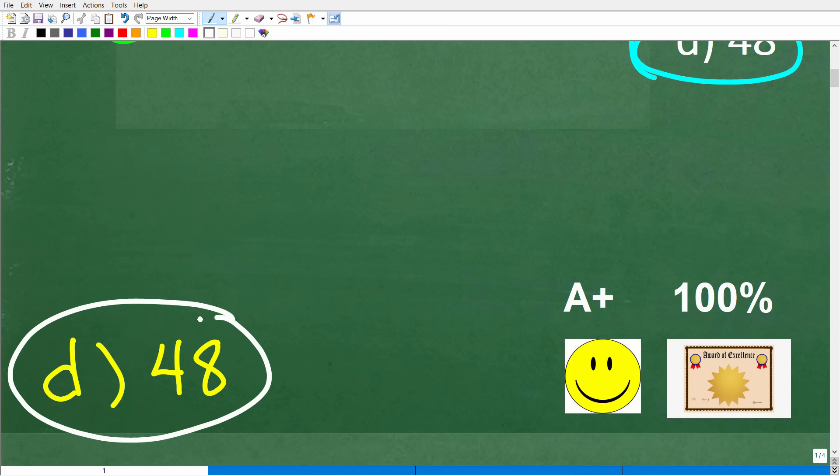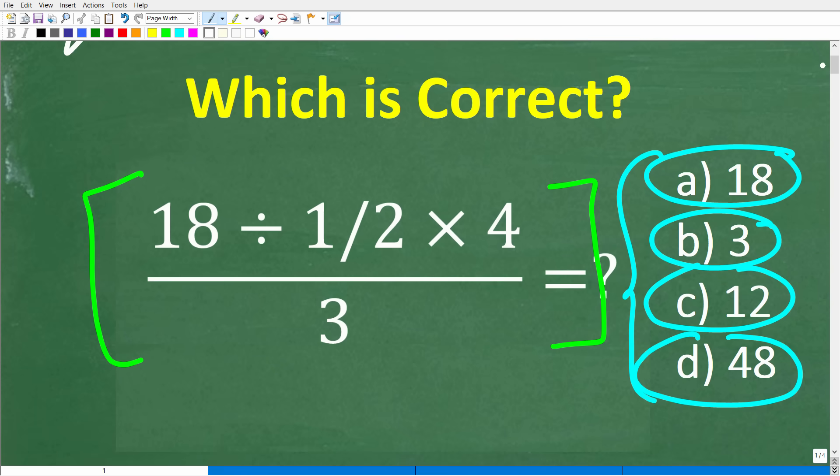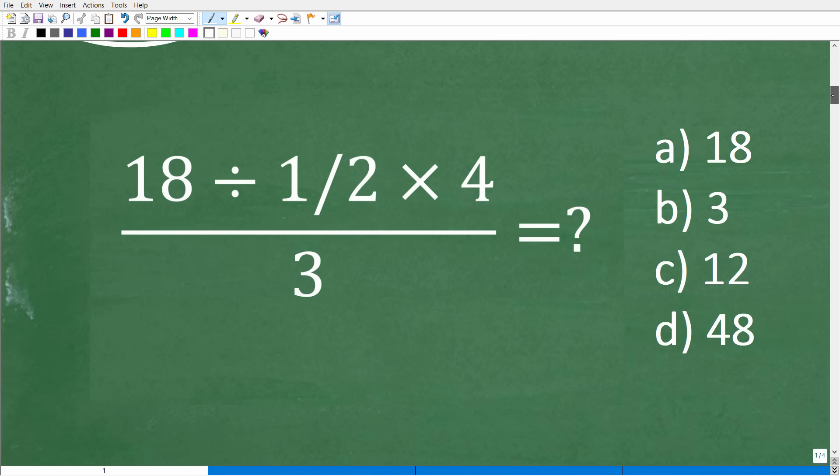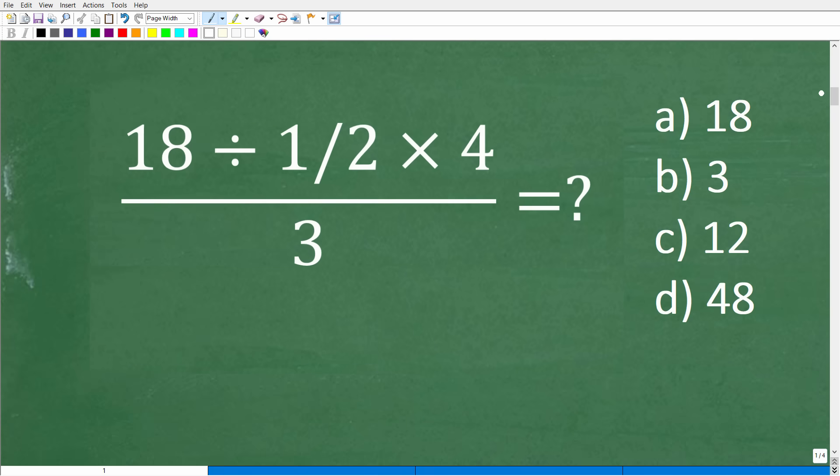Now, if you got this right, you definitely get a happy face, an A+, a 100%, and a Certificate of Excellence for being a certified professional expert in basic mathematics, which would include skills like dealing with fractions, basic multiplication, and most importantly, something called the order of operations. So congratulations, but if you made an error, don't feel bad. Probably a lot of you did. And let's take a look at this problem and see how someone could get the wrong answer.